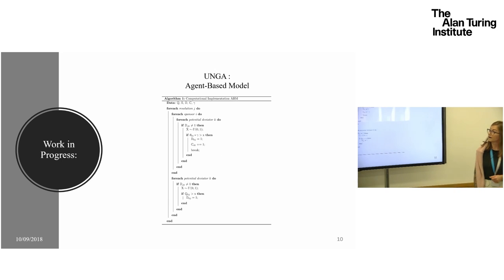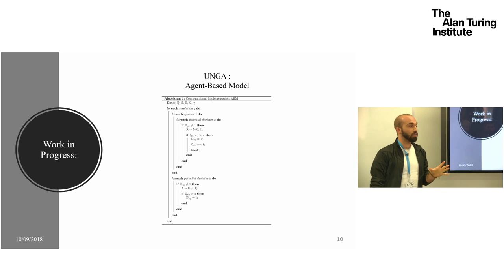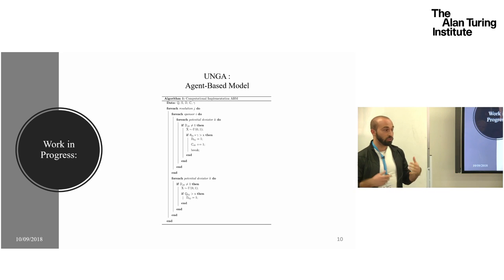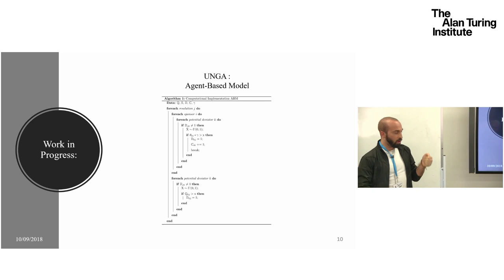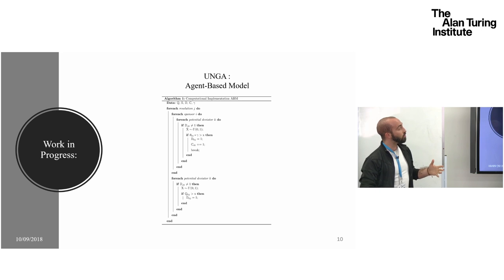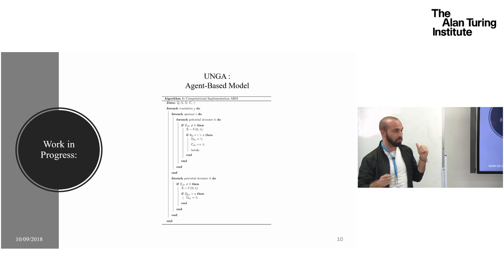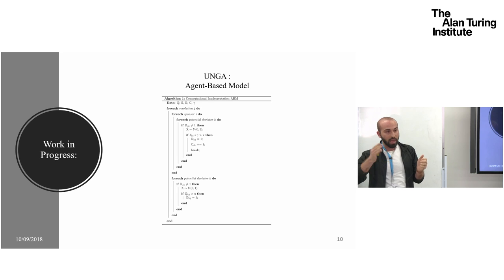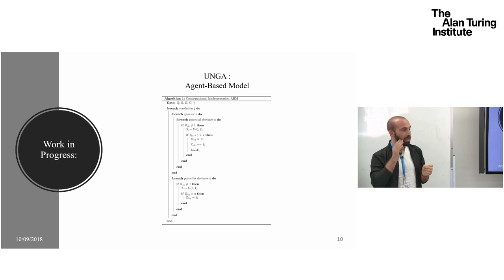For the UN General Assembly, I am developing an agent-based model to simulate the institutional setting with a switch to turn cooperation between agents on and off. I want to turn on cooperation and apply the methodology to see if I can effectively capture it. This will be useful not just to validate the methodology, but also to address the time dimension — turning on cooperation for specific periods to see if the methodology captures just those periods of cooperation.